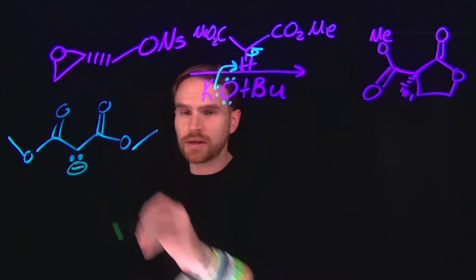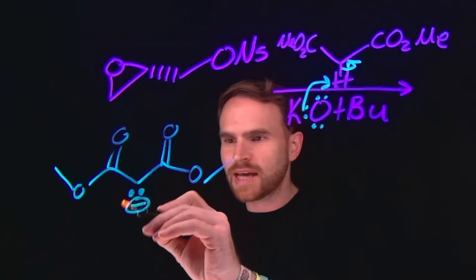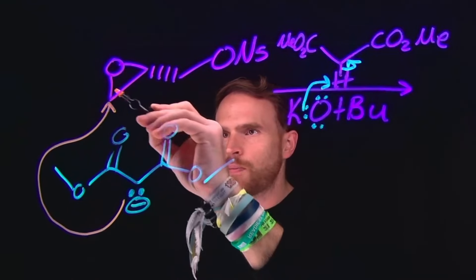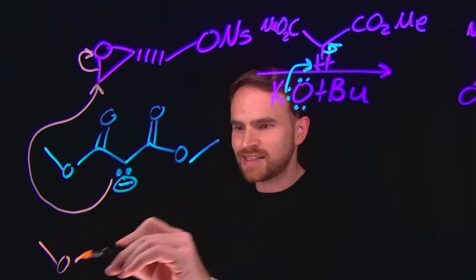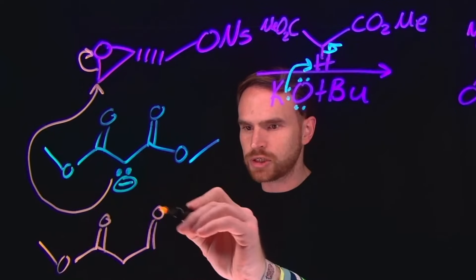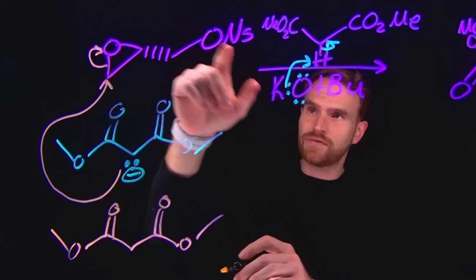This nucleophilic carbon will attack to open this epoxide ring at the less hindered position, just like this. From here, most of the molecule still looks the exact same. We are still left with this portion of our diester species, and now we have attached the rest of this chain.